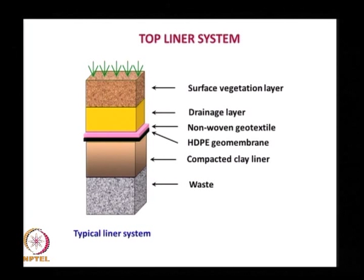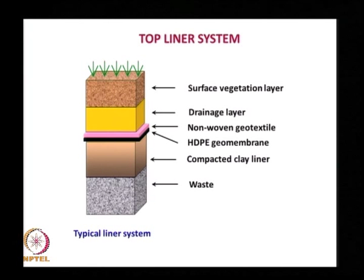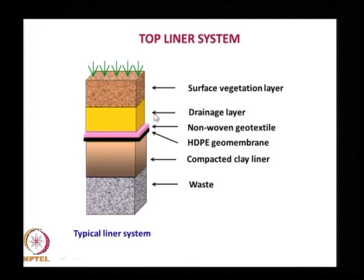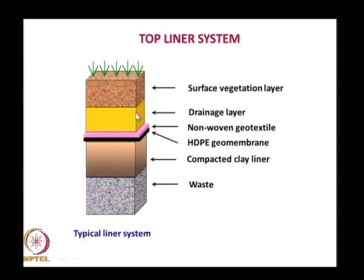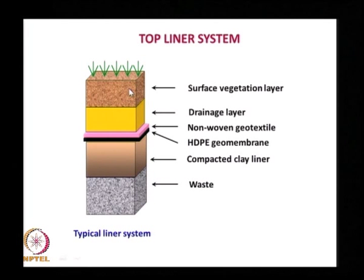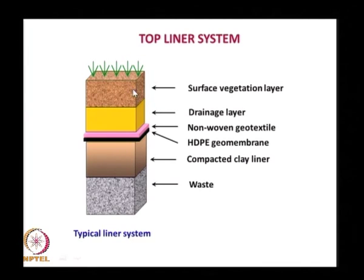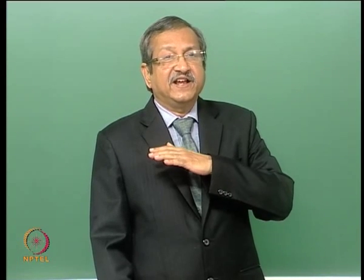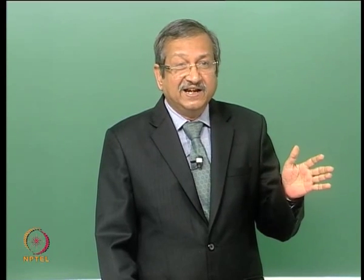Once a landfill is full — say after 25 years of service — the top liner system is applied. Over the existing waste, a compacted clay liner is placed, then a membrane, non-woven geotextile, drainage layer, and a surface vegetation layer. Normal soil is placed on top to create vegetation, and after closure using the top liner system, the landfill becomes an environmentally friendly area, almost like a park.